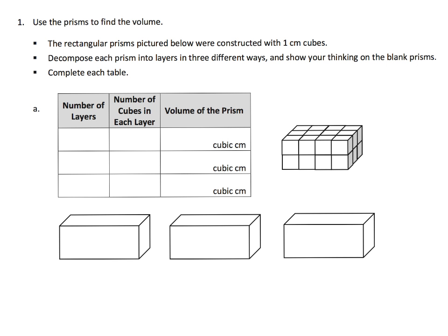So it says use these prisms down here, and we've got this rectangular prism. It says decompose this prism in three different ways to show your thinking. The first way I'm going to do it is like a wedding cake. So I can take this rectangular prism and I'm going to chop it up this way to make a wedding cake.